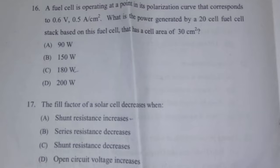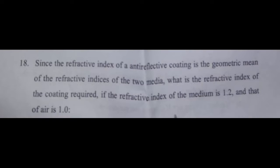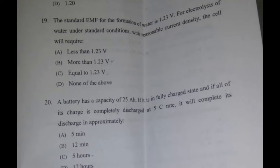Question 16: a fuel cell is operating at a point in its polarization curve that corresponds to 0.6 V and 0.5 A/cm². What is the power generated by a 20-cell fuel cell stack based on this fuel cell that has a cell area of 30 cm²? Question 17: the fill factor of a solar cell decreases when. Question 18: since the refractive index of an anti-reflective coating is the geometric mean of the refractive indices of the two media, what is the refractive index of a coating required if the refractive index of the medium is 1.2 and that of air is 1?